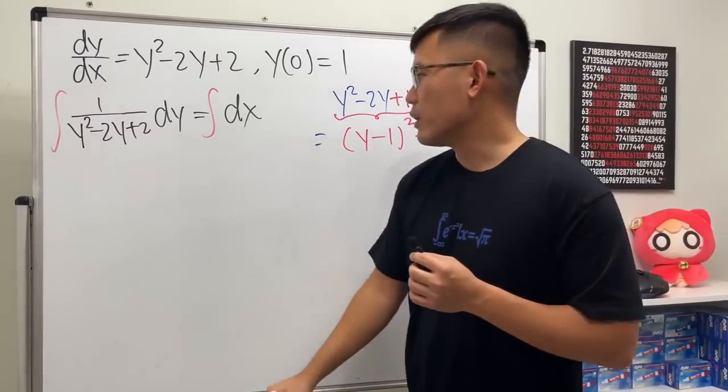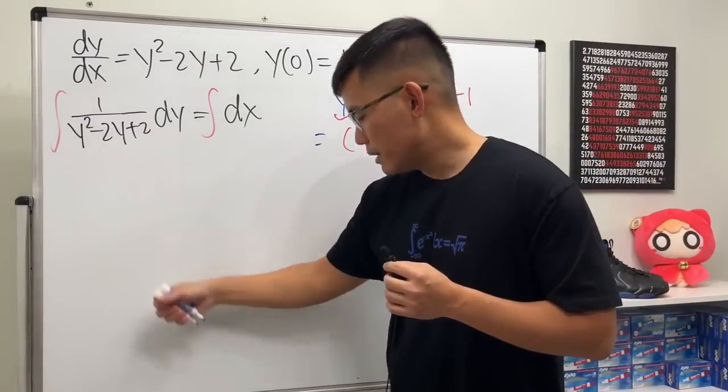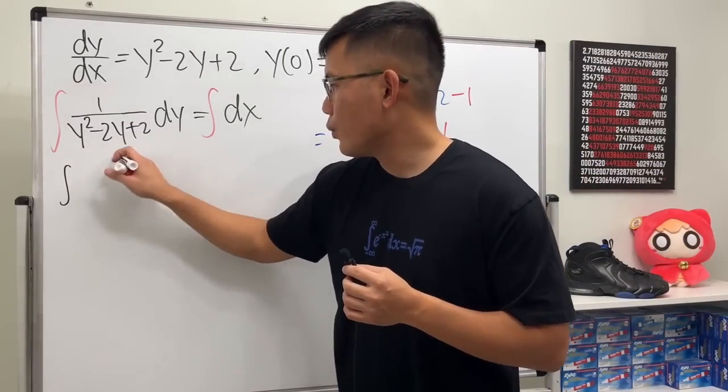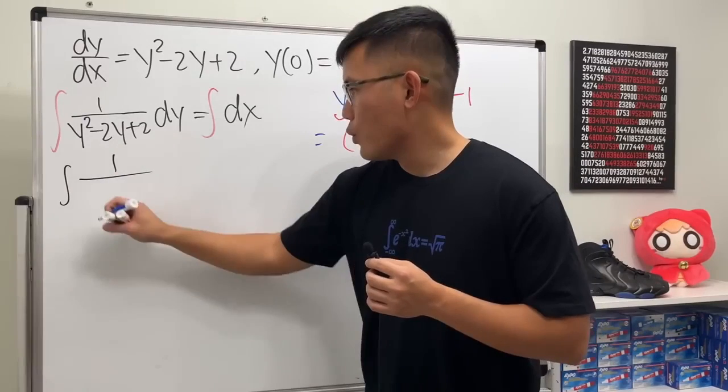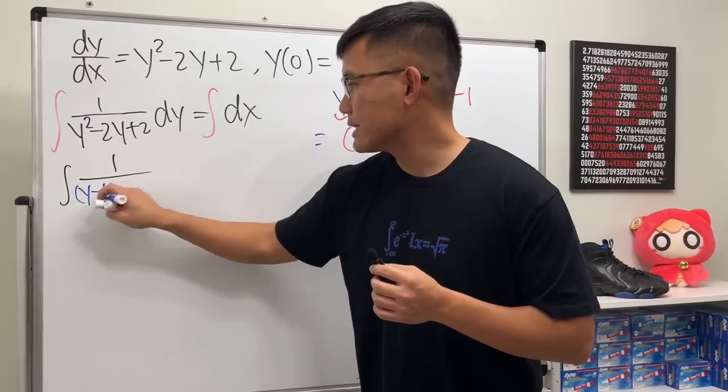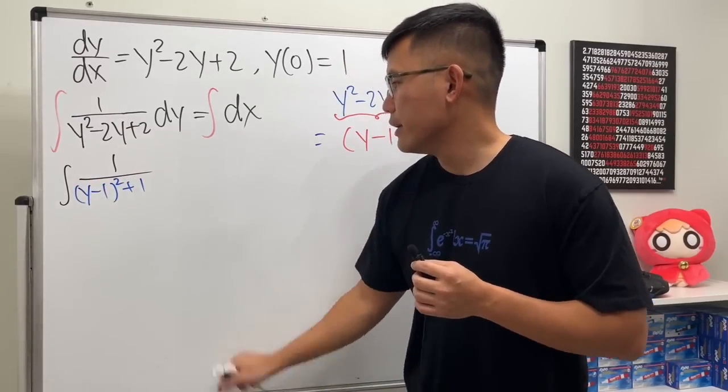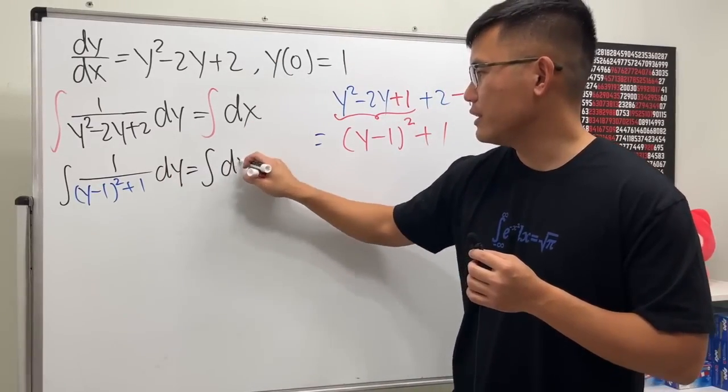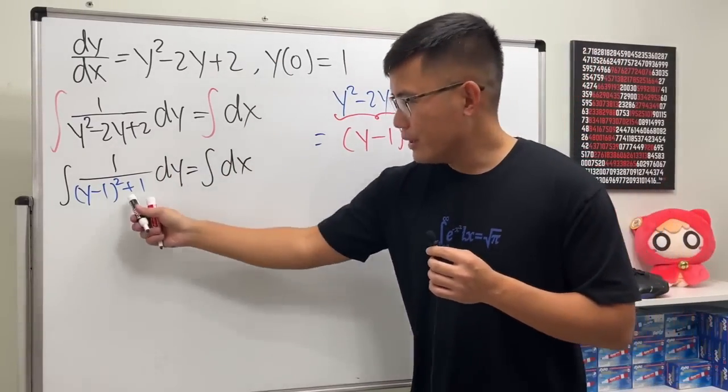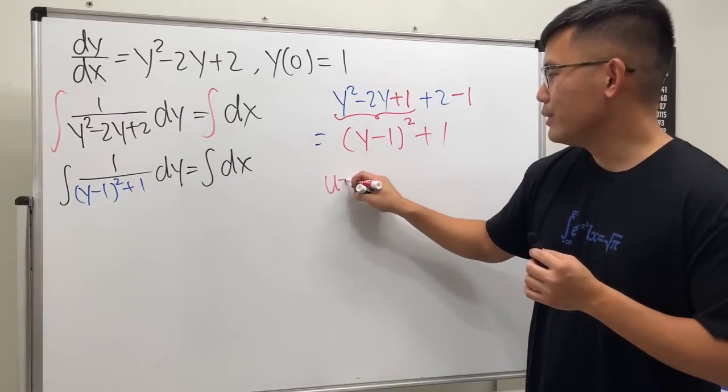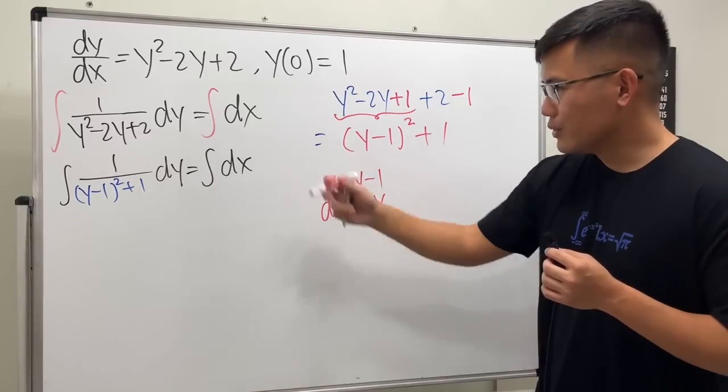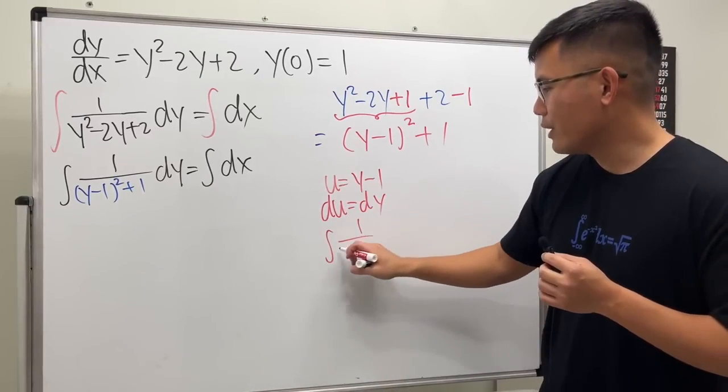So therefore on the bottom here, this is just equal to 1 over [(y - 1)² + 1] dy. And I will just put down the integral of dx. To integrate this, do a u-sub that u = y - 1, du is the same as dy, so we just need to integrate 1 over (u² + 1) in the u world.